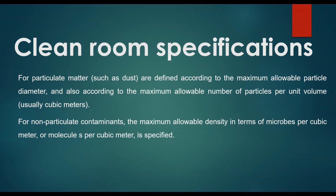Clean room specifications for particulate matter like dust are defined according to the maximum allowable particle diameter and the maximum allowable number of particles per unit volume. For non-particulate contaminants like microorganisms, the maximum allowable density in terms of microbes per cubic meter is specified. So both types have different measuring units: particles per unit volume for particulate matter, and microbes per cubic meter for non-particulate contaminants.